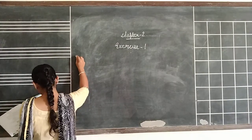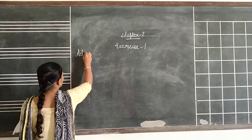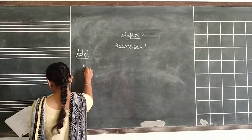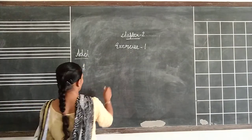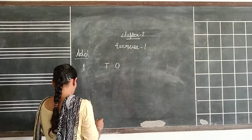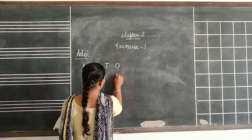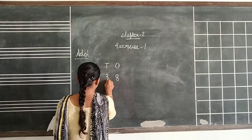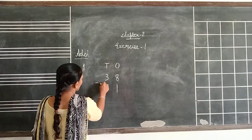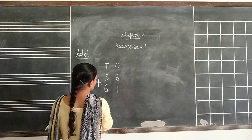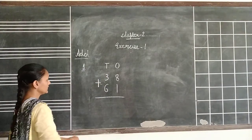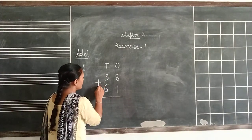First question: Add. This column is the ones place and this is the tens place. We have 8, 3, 8, 6, 1. The plus sign is the sign of addition.